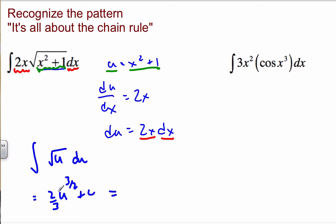And then the final thing is I replace U with what it was to begin with. And so I get 2-thirds X squared plus 1 to the 3-halves plus C. So this is the process of a U-substitution.